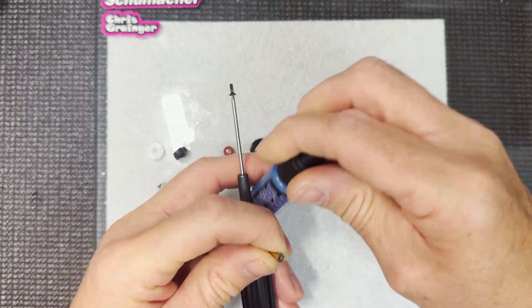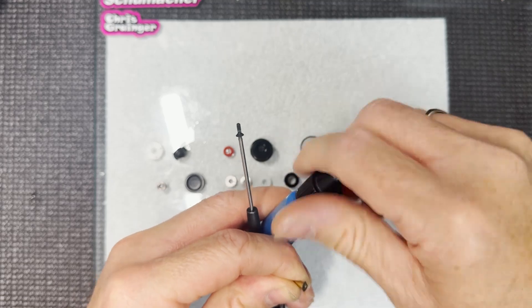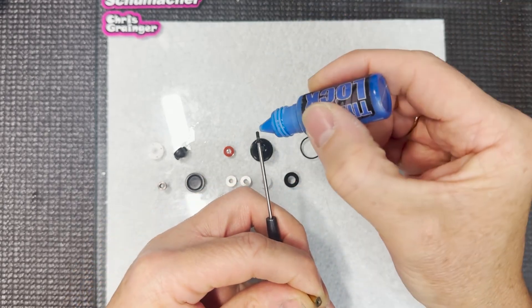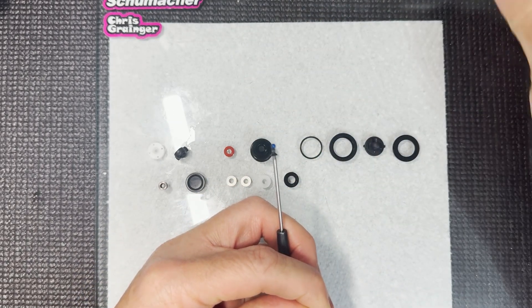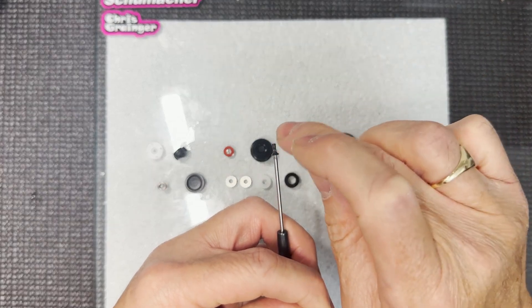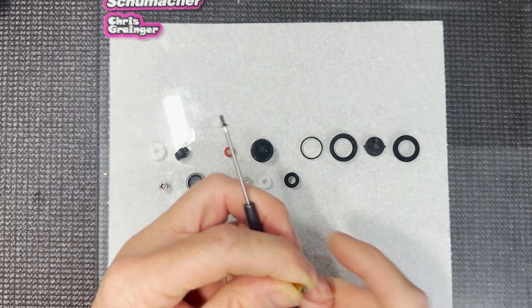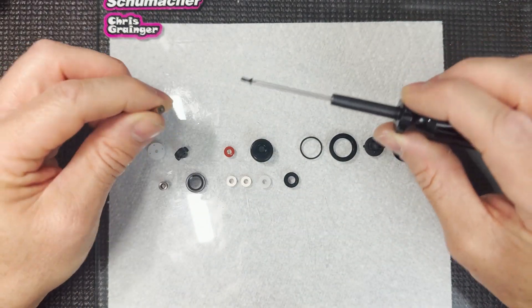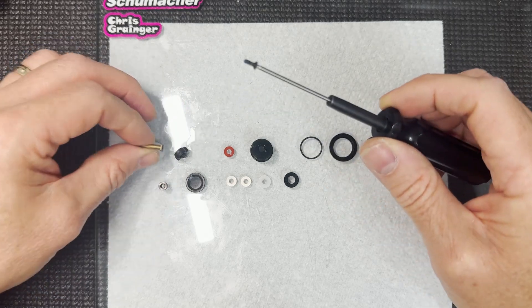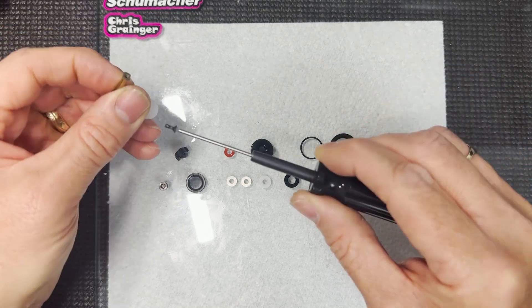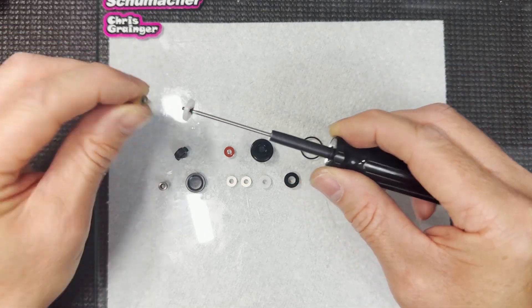This is just the Core RC thread lock. If you don't use the Core RC stuff, make sure that you don't use anything that's like the red thread lock or green. You do want to possibly be able to get it off again one day, so just make sure it's the blue stuff. Then we're going to just pop that on there and screw that together.